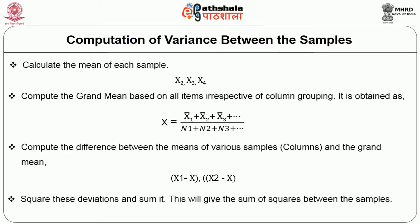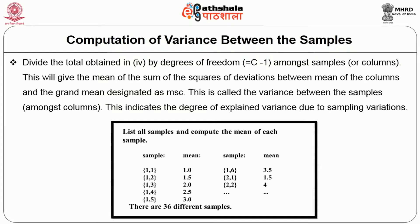Square these deviations and sum them to get the sum of squares between samples. Then divide the total by degrees of freedom (T − 1) among the samples. This gives the mean sum of squares of deviations between means of the columns and the grand mean, designated as MSC. This is called the variance between the samples, and it indicates the degree of explained variance due to sampling variations.